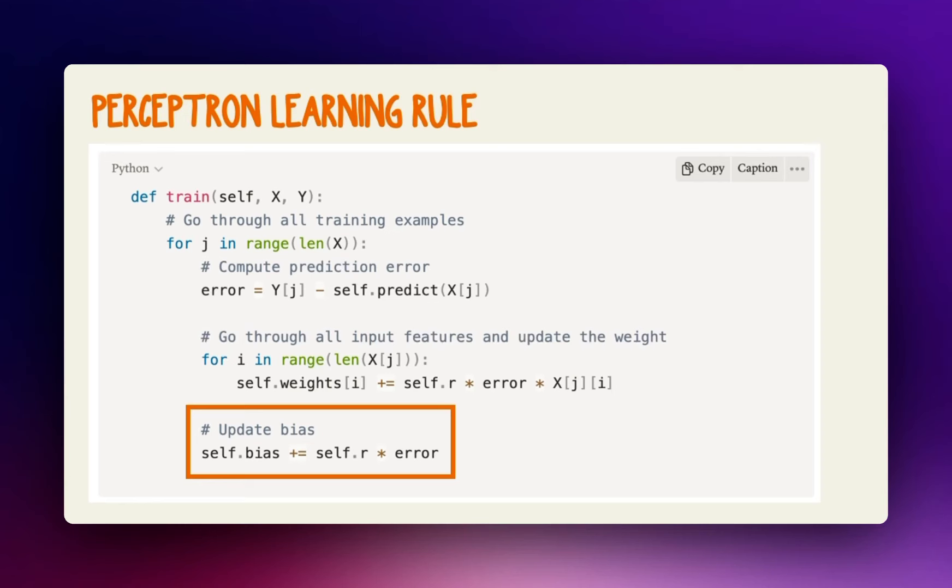To get really fancy, you can multiply with an extra coefficient between 0 and 1 called learning rate, which controls how fast the perceptron should update its weights. You can also run all training examples multiple times, and each complete pass is called an epoch.